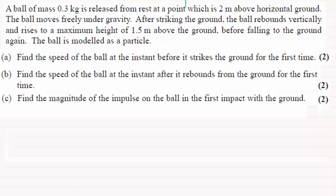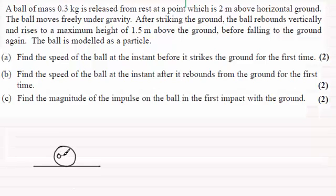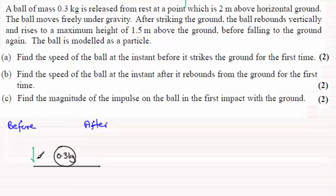Okay, welcome back. So I'm just going to draw a sketch for this, as I would normally do for any impulse question. We've got the ball as it hits the ground — it's got a mass of 0.3 kilograms — and I'm going to be looking at before impact on the left hand side. Before impact, we found in part A that the ball hit the ground with a speed of root 4g meters per second.